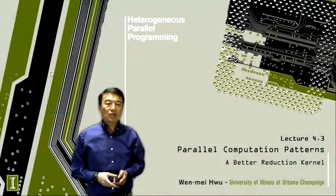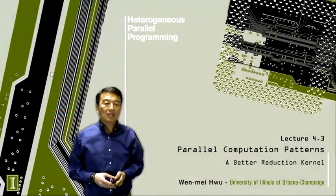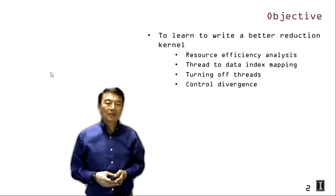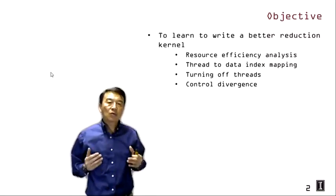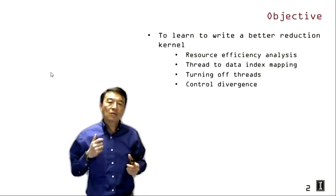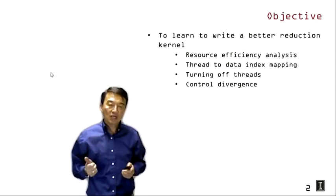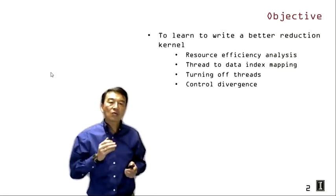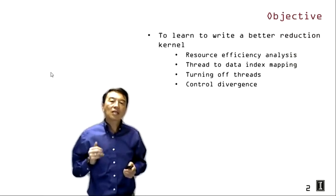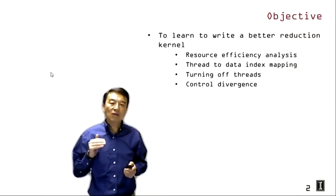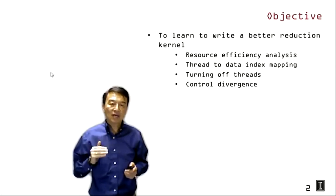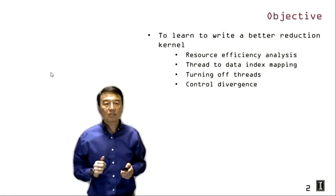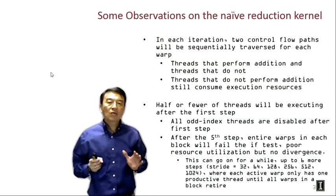Welcome back to the History Genius parallel programming class, lecture 4.3. We're going to learn how to write a better reduction kernel. The objective is to improve resource efficiency analysis, adjust the thread-to-data index mapping accordingly, and see the productive effect on resource usage in the presence of turning off threads and control divergence.